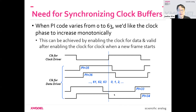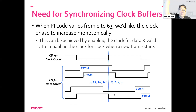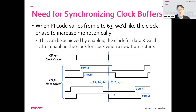Clocks are supposed to stop when a frame is done and restart when a new frame begins. When you start a new clock, you start three clocks simultaneously — one for data, one for valid, and one for clock — and they all have arbitrary phases. So there's no guarantee of which one will toggle first.